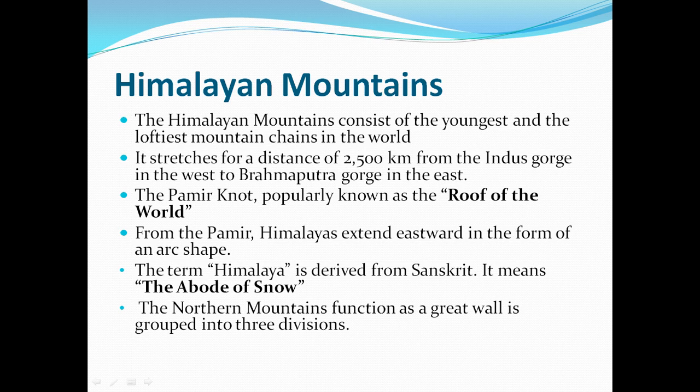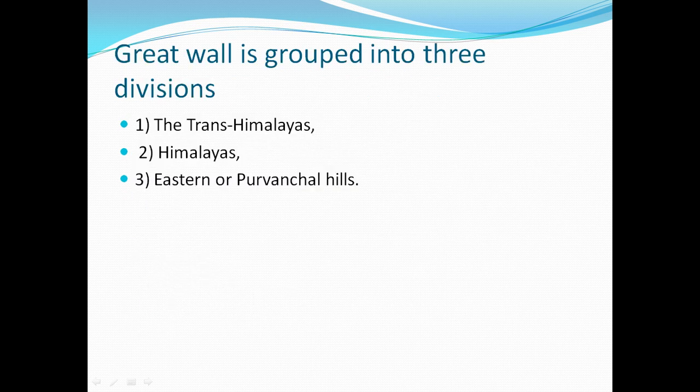The northern mountains are grouped into three divisions: the first is the Trans-Himalayas, the second is the Himalayas, and the third is the Eastern or Purvanchal hills.